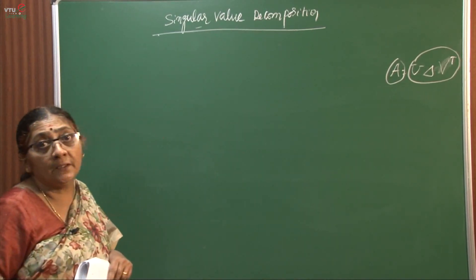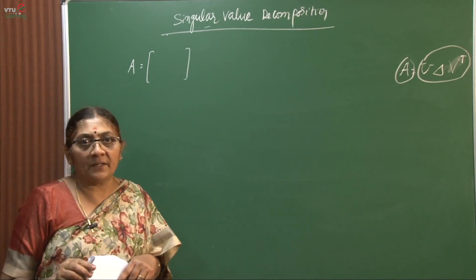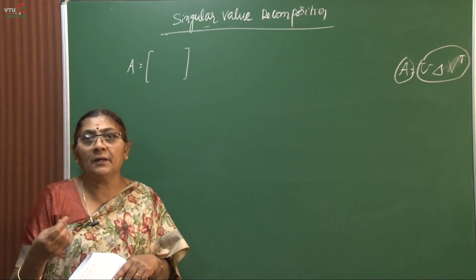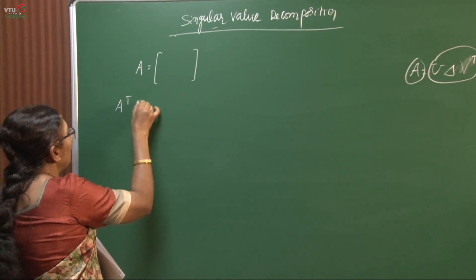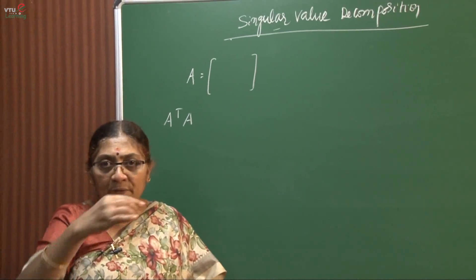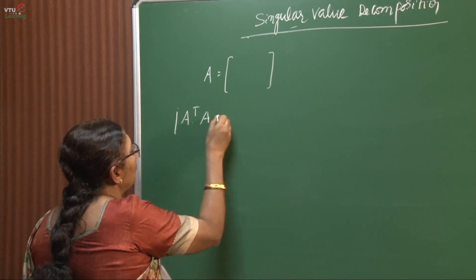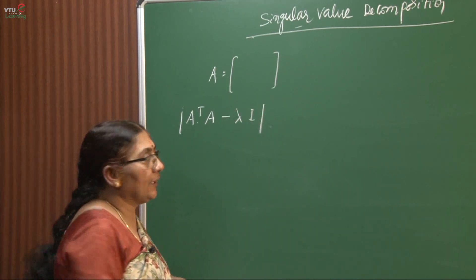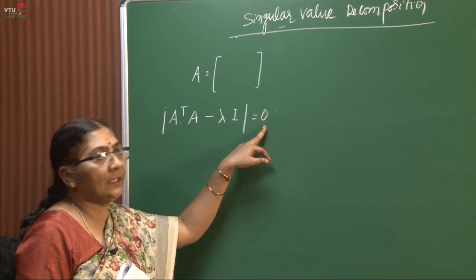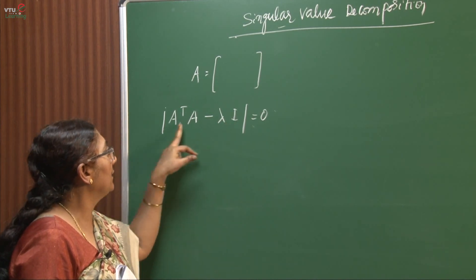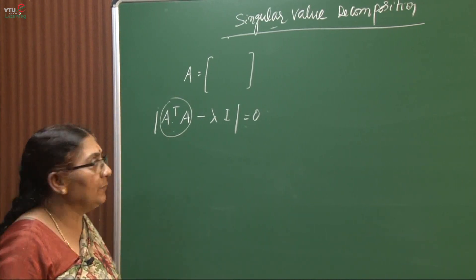What is the meaning of singular values? The given matrix may not be a square matrix — it may be a rectangular matrix where the number of rows is not equal to the number of columns. In that case, first you find A transpose times A. Once you have that, you find the eigenvalues using the determinant of A transpose times A minus lambda I equal to 0, which is already explained in my previous video.